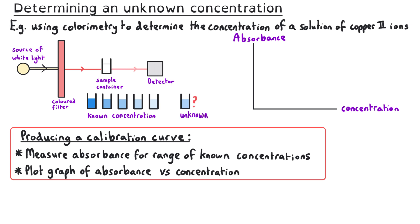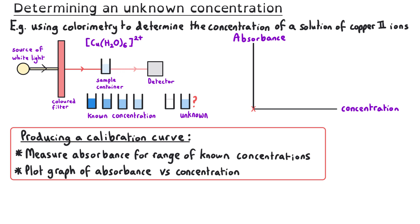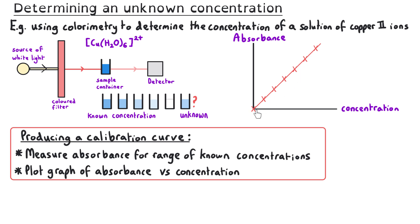First, we use a reference sample — a container with just distilled water — and reset the colourimeter so that the absorbance for this sample is zero. This makes sense because if the concentration of our sample is zero, the absorbance should be zero. We then substitute this for a container with hexa aqua copper 2+ at a known concentration and measure that absorbance, repeating this for several different concentrations until we have enough data to plot the trend line. We connect the points with a line of best fit that goes through the origin, because if concentration is zero, absorbance should be zero.